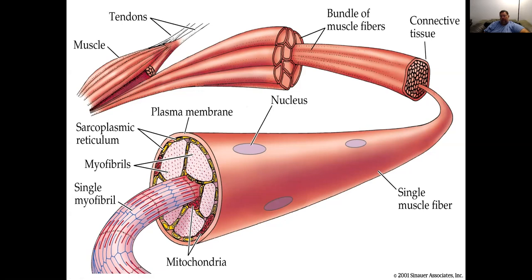Muscles have nuclei that hold DNA, which can be transcribed to make messenger RNA and ultimately translated into protein. Muscle fibers need a huge amount of protein, and that's why you have so many nuclei. When you work out, you can produce more nuclei. This leads to the concept of muscle memory: if you stop working out, your muscles may shrink, but when you return to exercising they can grow faster because of the extra nuclei built up from previous exercise.